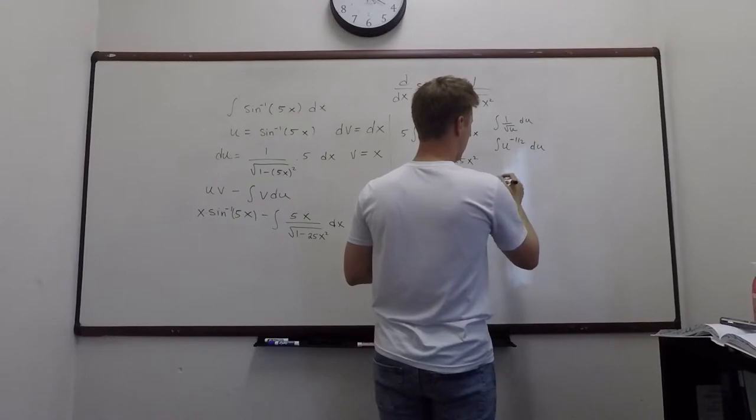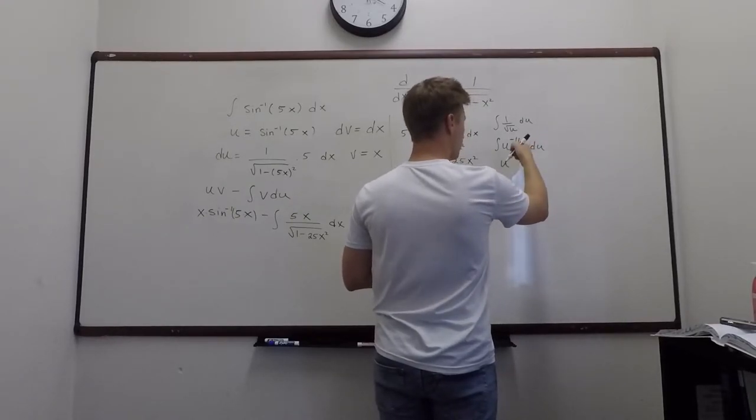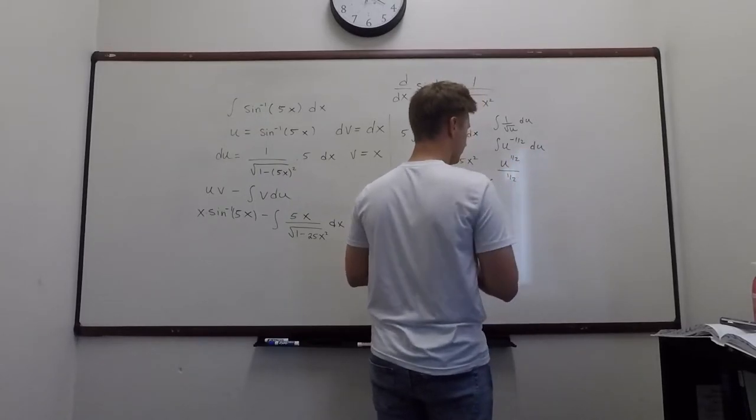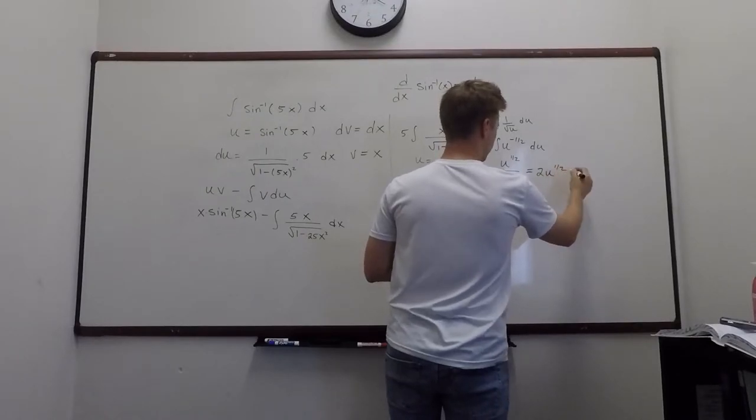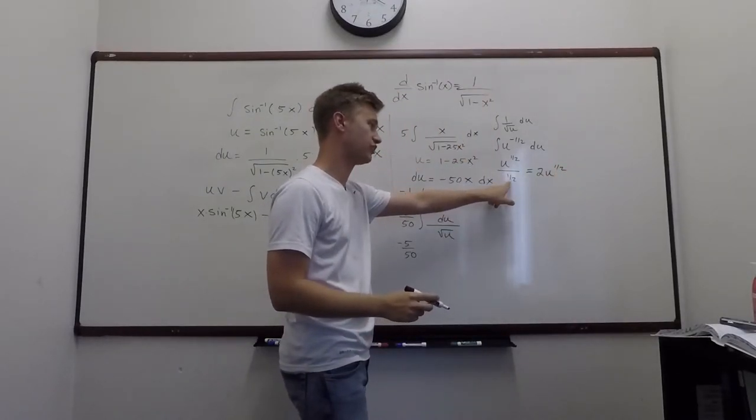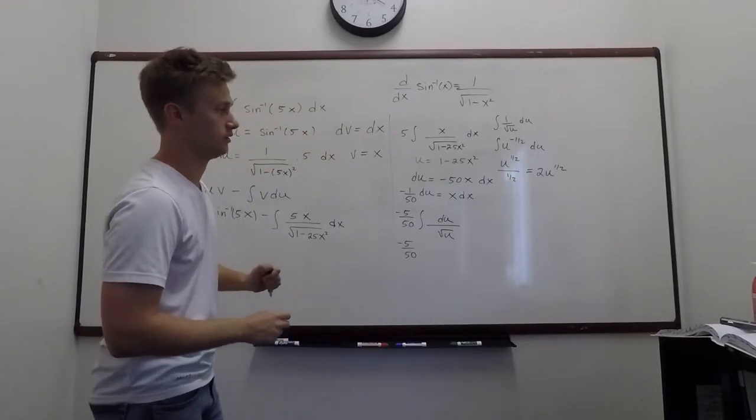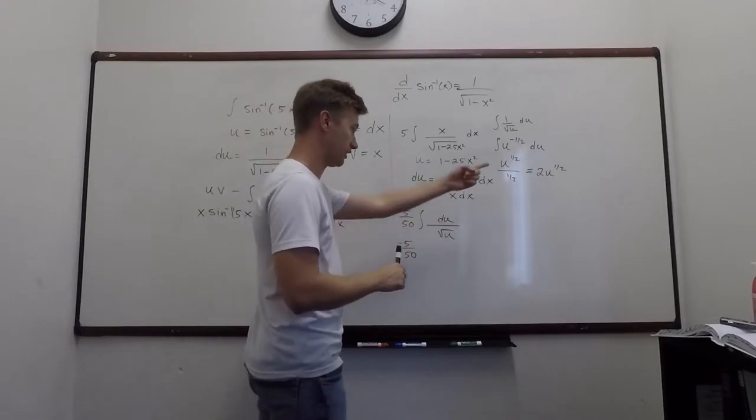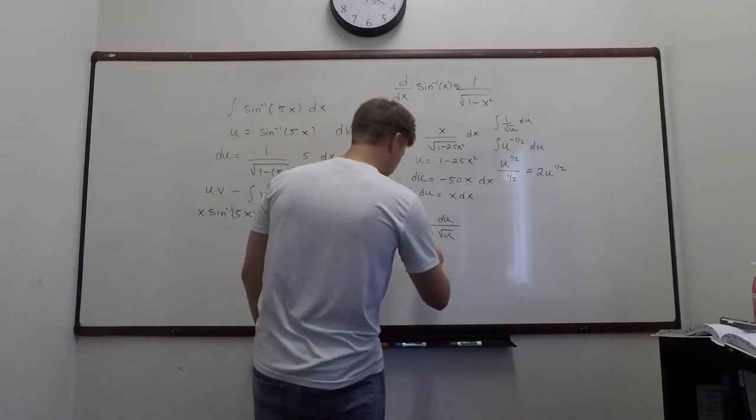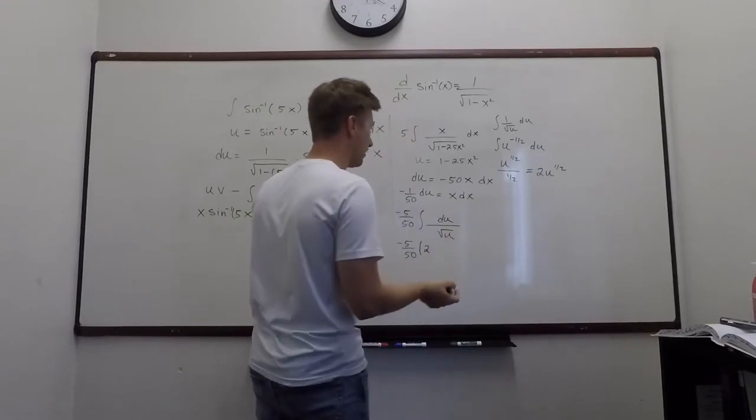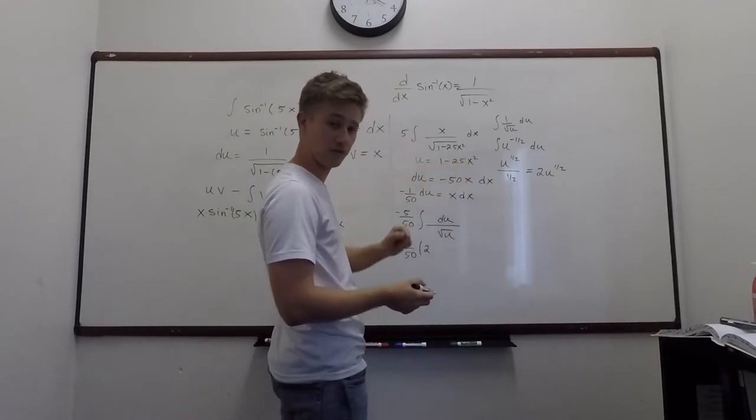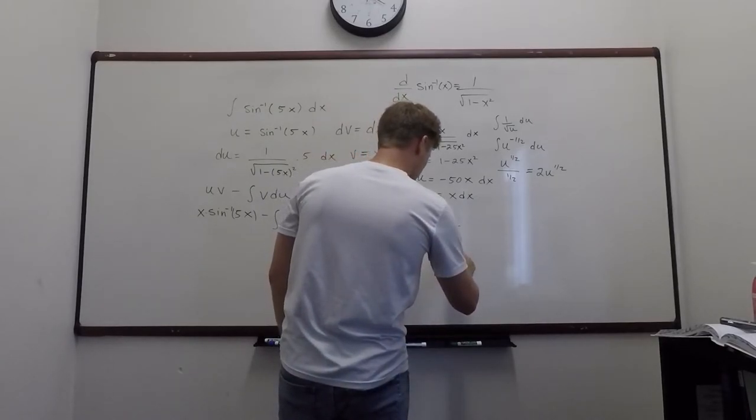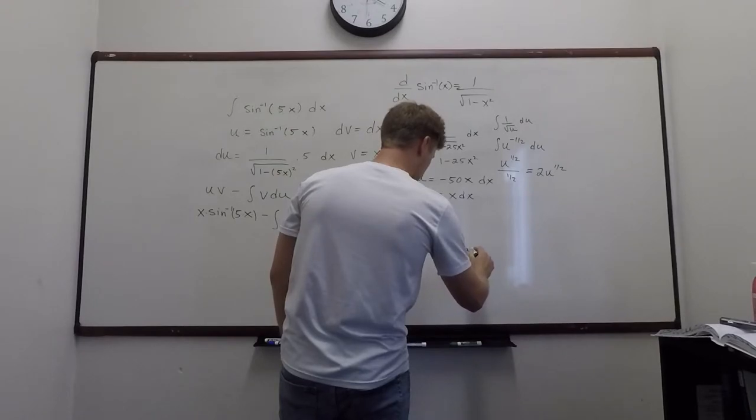And then what do I do? I can just apply the power rule, so I can add 1 and divide. So negative 1 half plus 1 is 1 half, divided by 1 half. This is the same thing as 2u to the 1 half. When you divide by a fraction, it turns into, it looks like that. Okay, so this entire thing just becomes 2u to the 1 half. So I have 2u to the 1 half, but what was u? u was 1 minus 25x squared. So then I have 2 times 1 minus 25x squared to the 1 half.